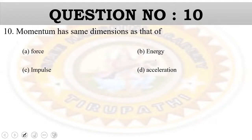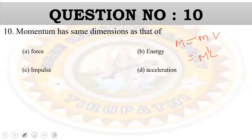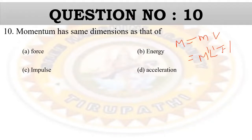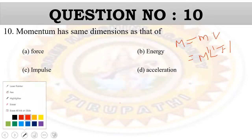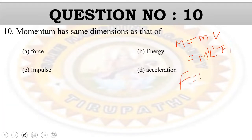Question number 10: Momentum has the same dimensions as that of which quantity? Momentum equals mass into velocity, so its dimensional formula is M¹L¹T⁻¹. Now checking impulse: force equals mass into acceleration, and energy equals force into displacement.